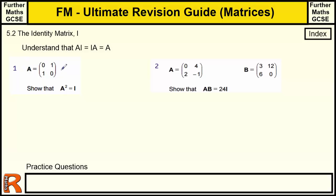So we have matrices here, A. We've got to show that A squared equals I. Now the identity matrix is 1, 0, 0, 1. And that will keep everything the same if you multiply it by anything. So let's have a look at A squared. So A squared is going to be that times by itself.